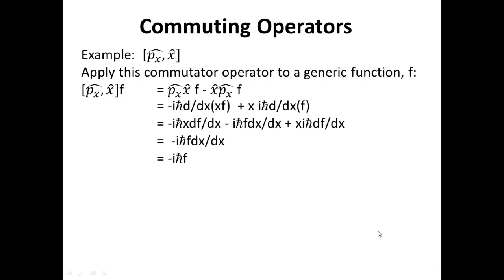And then our first term here has a derivative of a product function x times f. And so we have to apply the chain rule to that function. So we get one term from the chain rule here, a second term from the chain rule on that function x times f. And then the second term in the second line we just distribute that function f through the derivative.